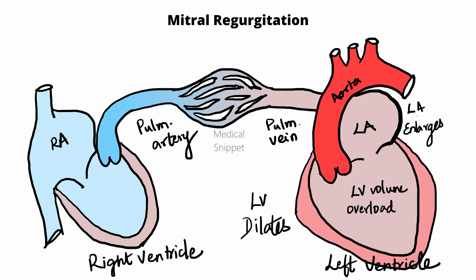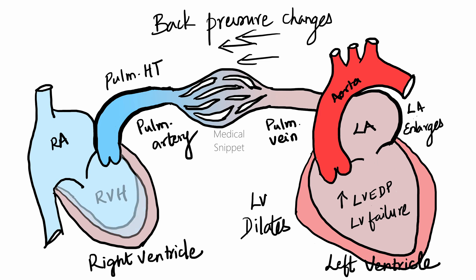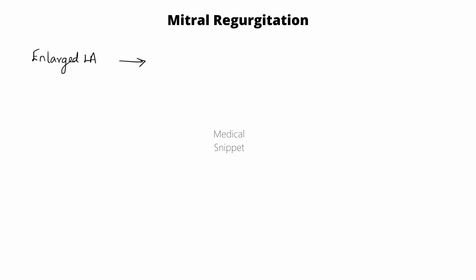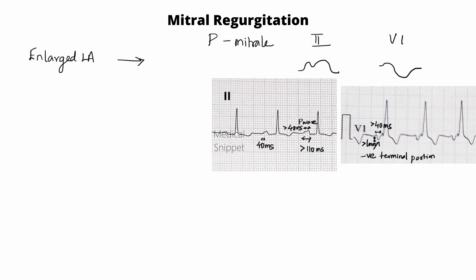As the disease progresses, there is increase in left ventricular end diastolic pressure and left ventricular failure occurs. This leads to back pressure changes in the pulmonary vasculature, causing pulmonary venous congestion, pulmonary hypertension, right ventricular hypertrophy, and tricuspid regurgitation. The enlarged left atrium is seen as P mitrale in lead 2 and enlargement of the terminal negative portion of the P wave in V1, as seen in mitral stenosis.